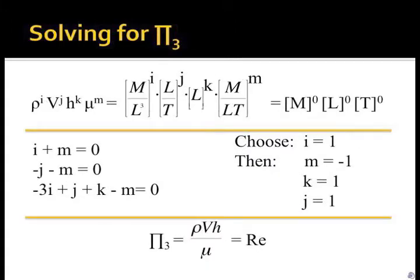For the final pi term, the variables are density, velocity, height, and viscosity. Again, the same process yields the third pi term. The third pi term is a special constant known as Reynolds number that is the ratio of the inertial and viscous force on a fluid.